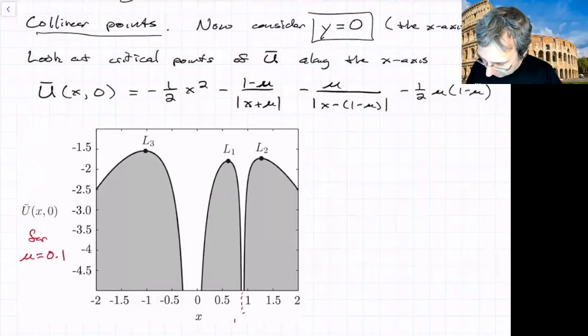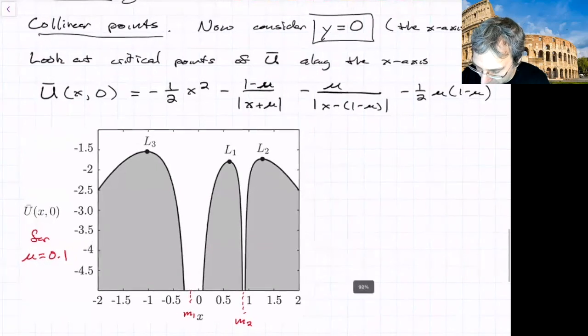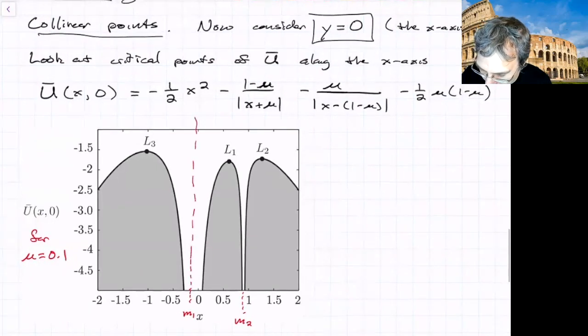So m2 is there, m1 is there. You can see there are some peaks, some critical points. Using standard methods of calculus, you can show that there should be three critical points, one in each of three intervals along the x-axis. m1 and m2 sort of delineate those intervals. There's going to be one in this interval, one in this interval, and another in this interval.